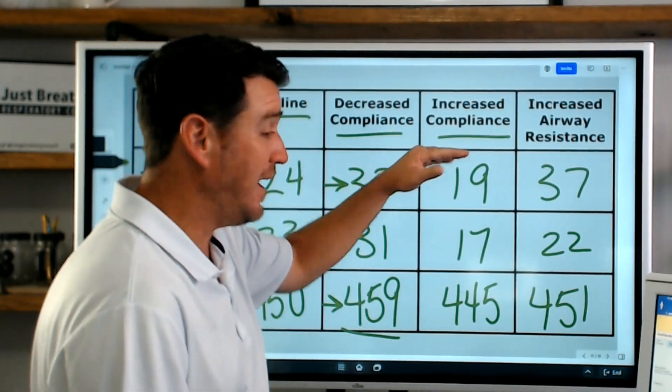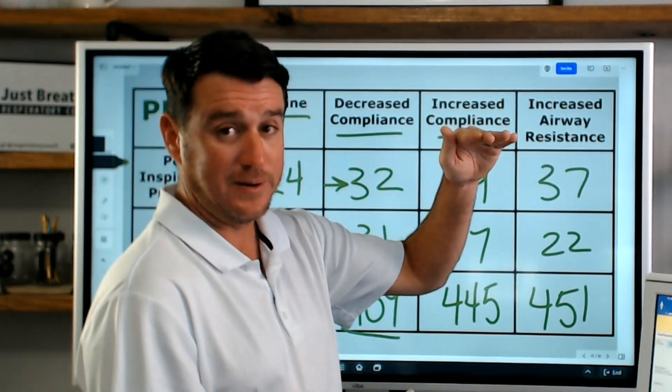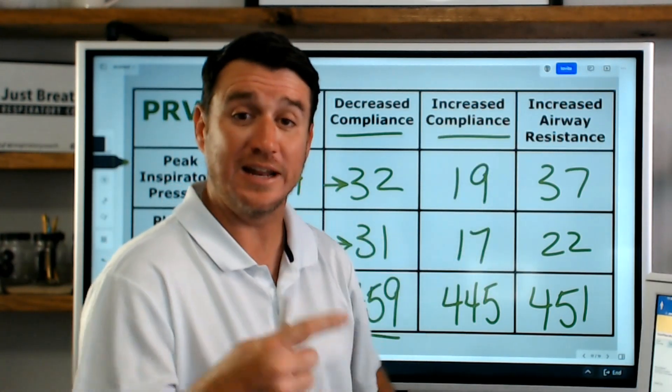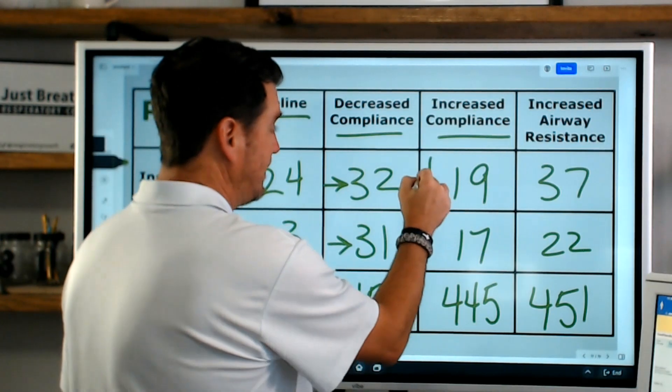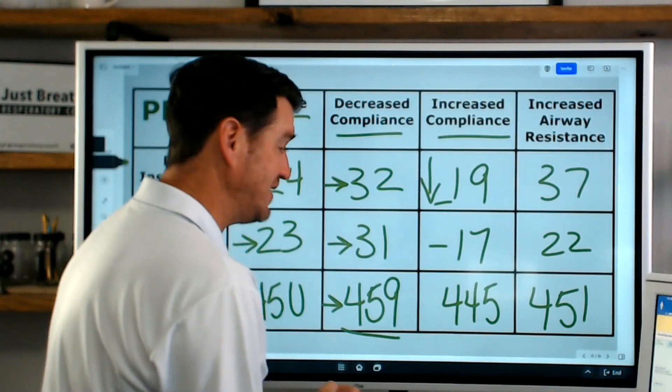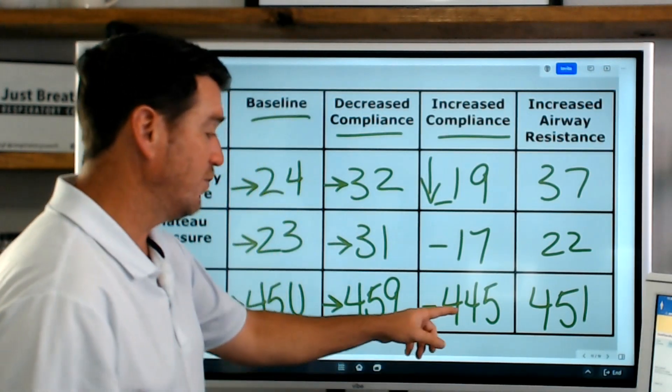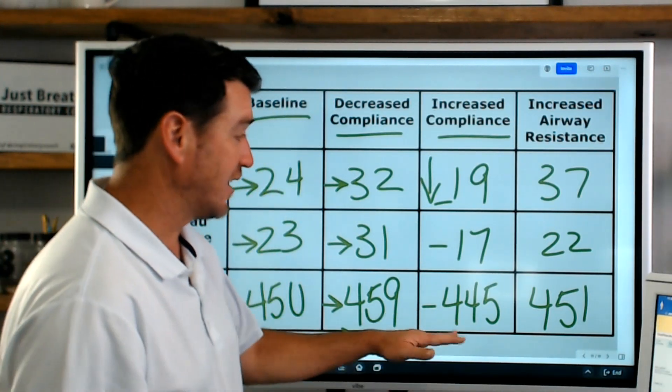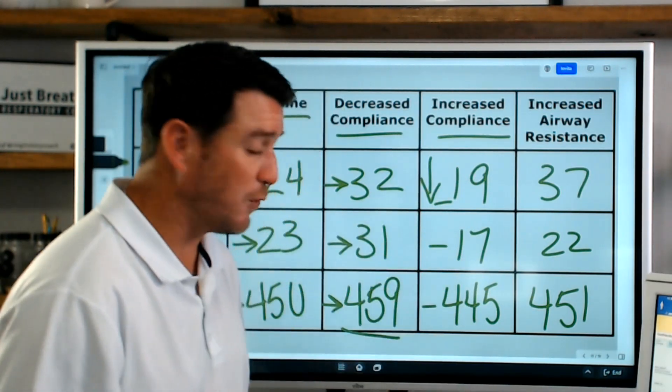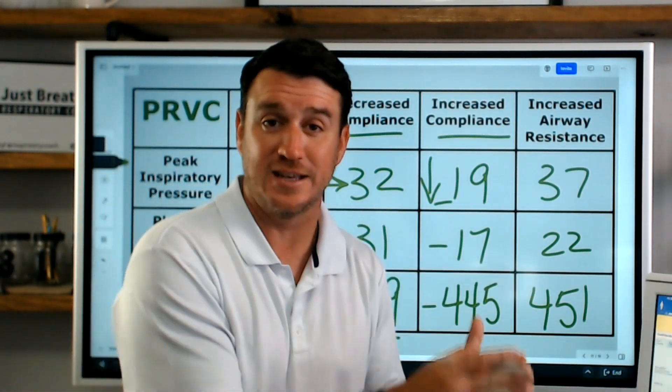So when we increased compliance, volume went way up and the ventilator said, wait a second, that volume is too high. So what did it do? It decreased pressure down to 19. Our plateau was 17 and our volume was 445. And the ventilator said, this is the pressure that is needed to deliver 450 based off of this compliance.